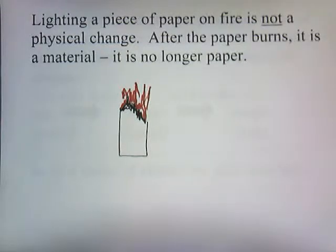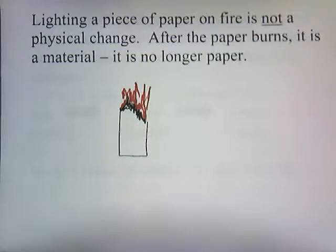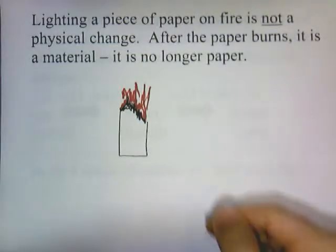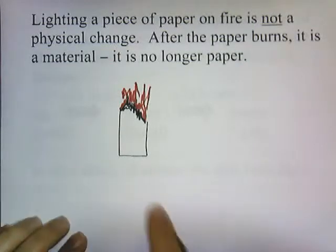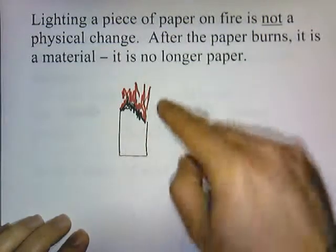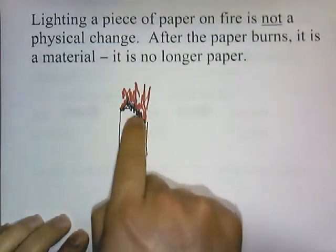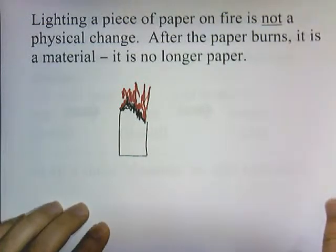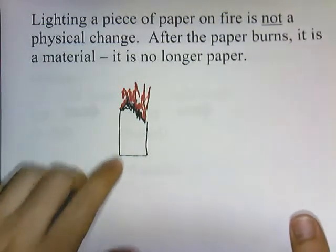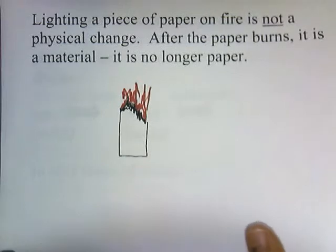On the other hand, if we light a piece of paper on fire, we see a change, but the paper is no longer paper. The paper is changed into another type of material, so it is not a physical change. I would light a piece of paper for the camera here, but smoke is not good for computer equipment. You can see the paper turning black — lighting a piece of paper on fire is not a physical change because the paper changes into another substance.